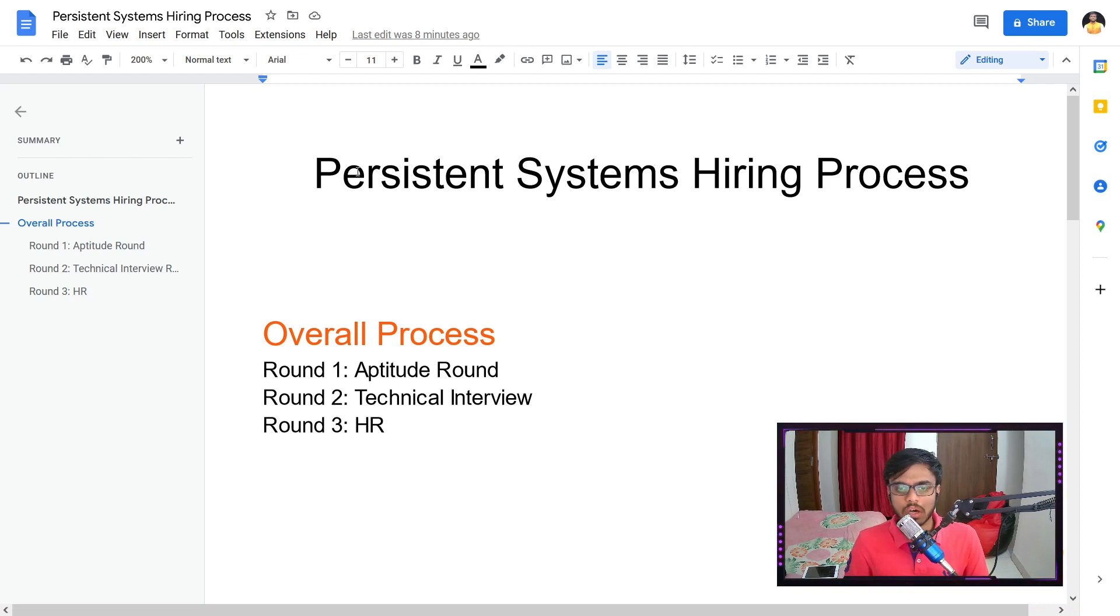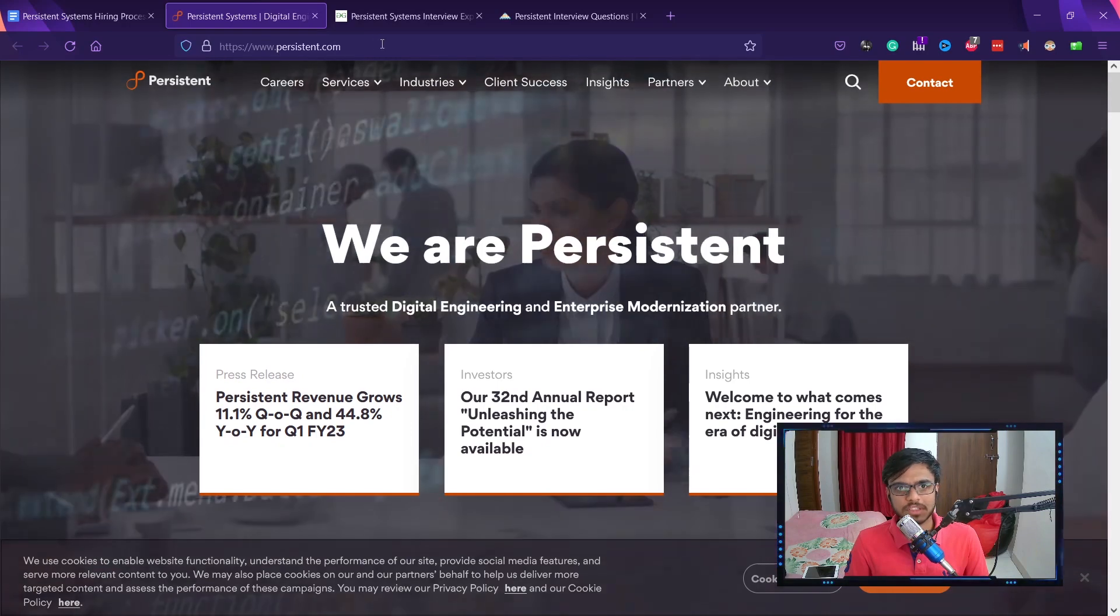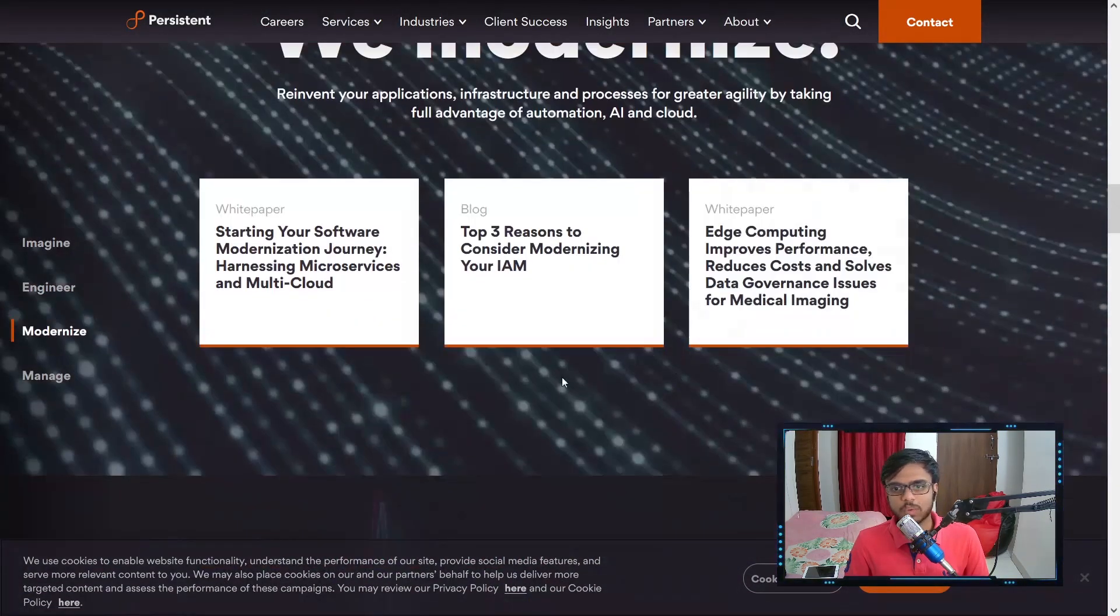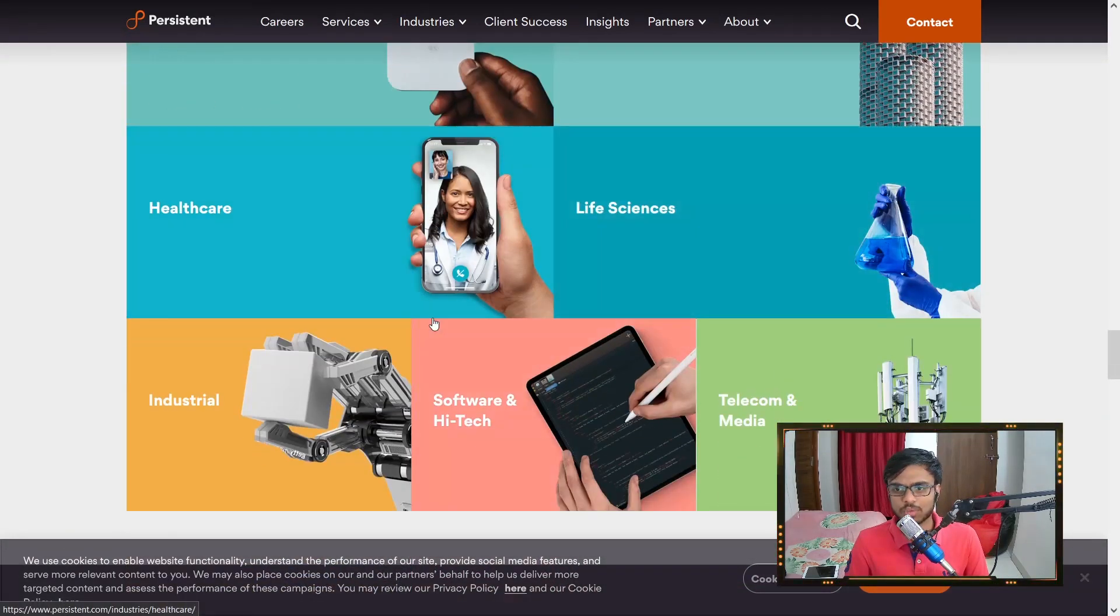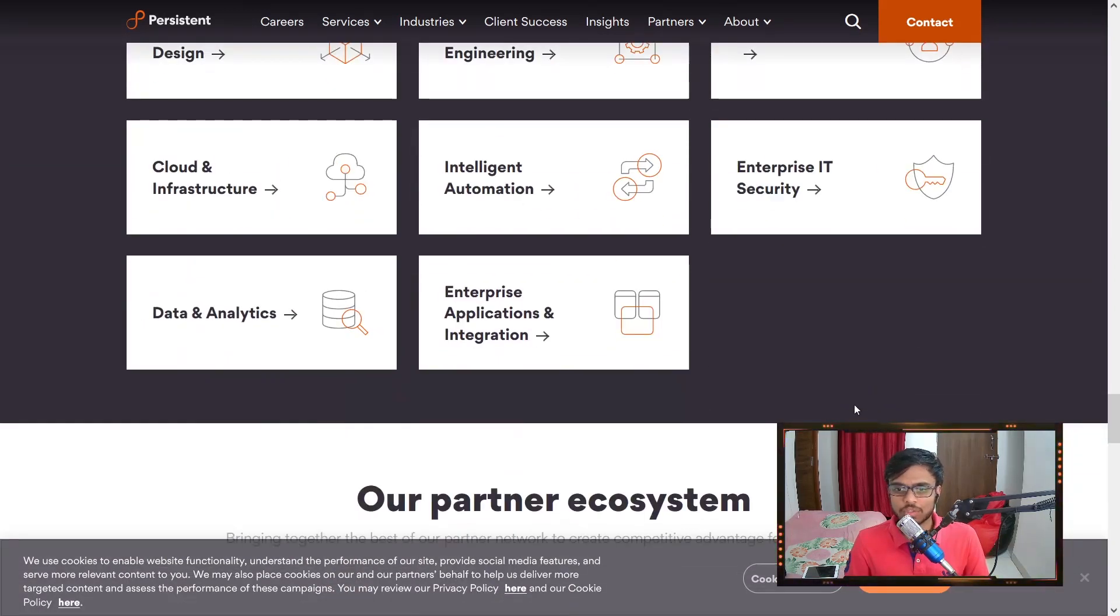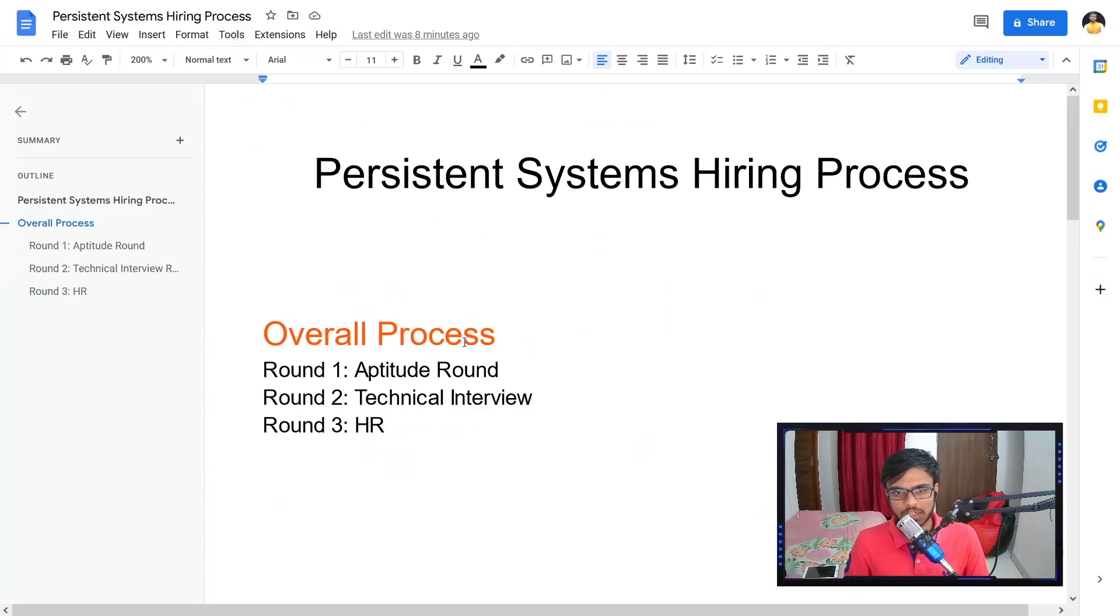Before we dive into how the hiring process was, if you want to check about what the company does, you can go to their site persistent.com and you will find quite a lot of products, what they do, what domains they're working in. I think they have touched almost most very important domains that there are products in. So yeah, you can check about the company on their website.